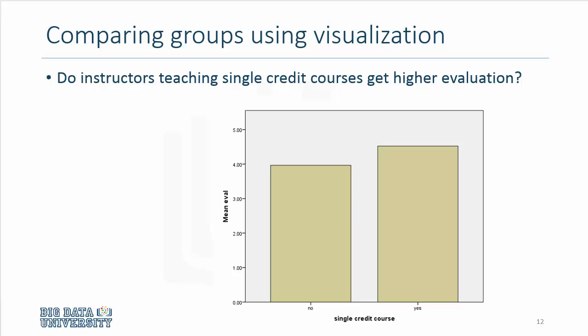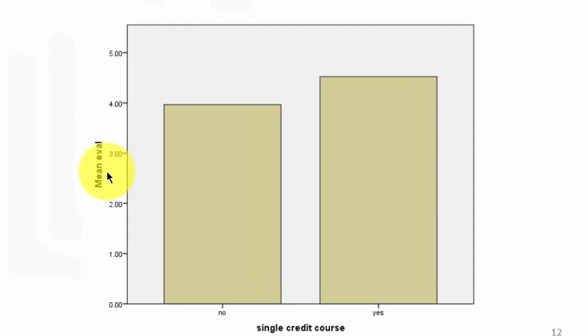So using the same data set of teaching evaluations, we asked this question: do instructors teaching single credit courses get higher evaluations? And we see that yes, they do. The mean evaluation, when plotted as a chart, you see that those who teach single credit courses, the average teaching evaluation is slightly higher.